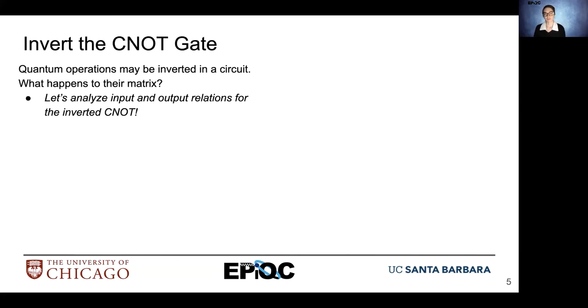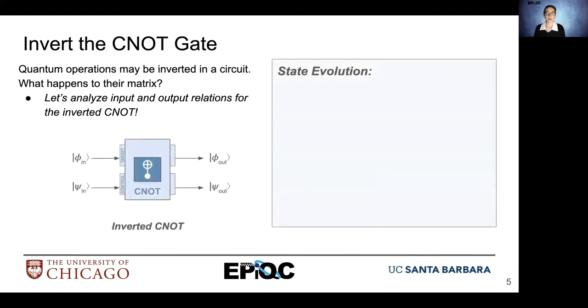In quantum circuits, we might not only see the CNOT gate in its standard orientation. So what happens if it's flipped — if we have the target on top and the control on bottom?